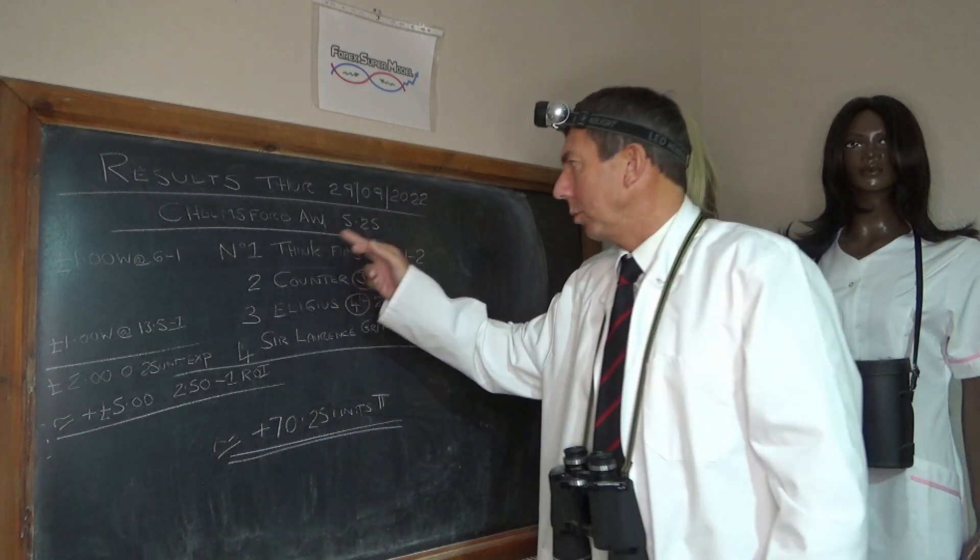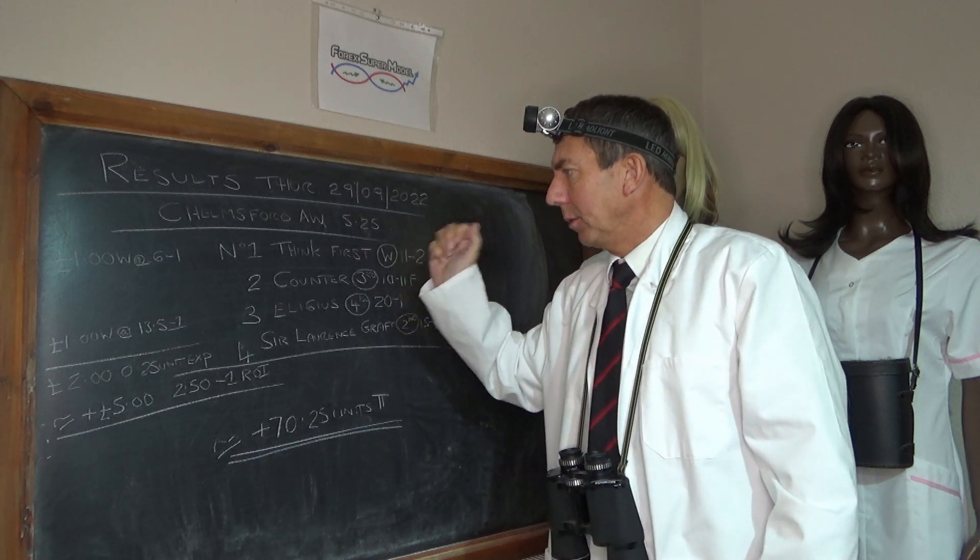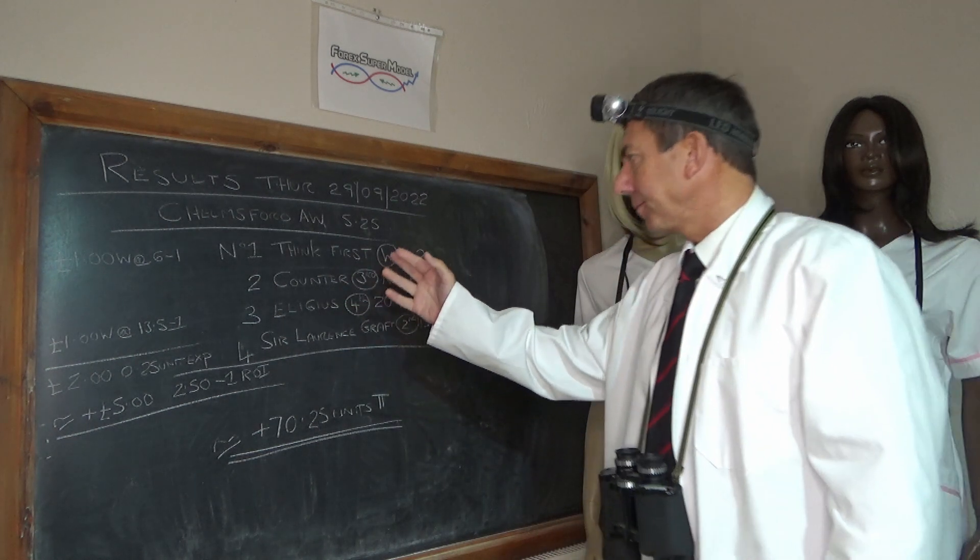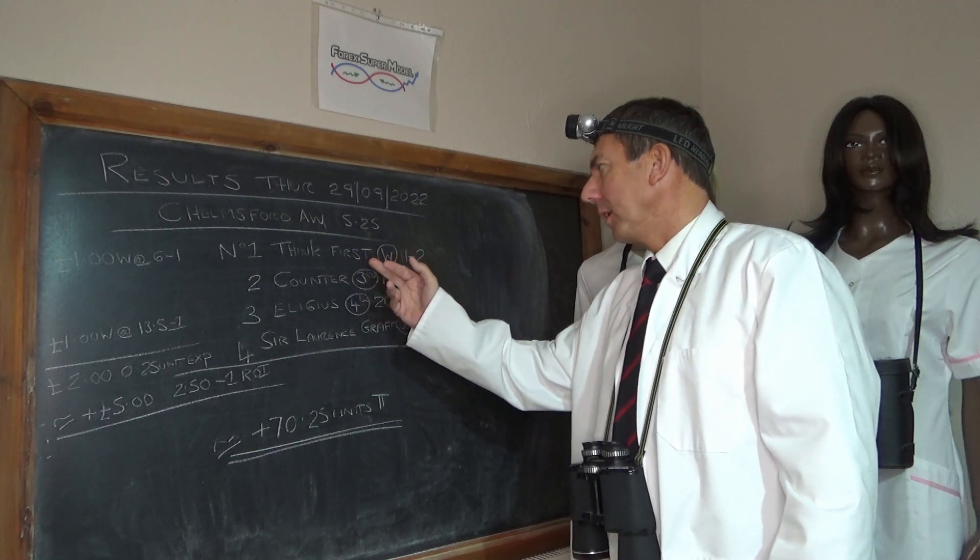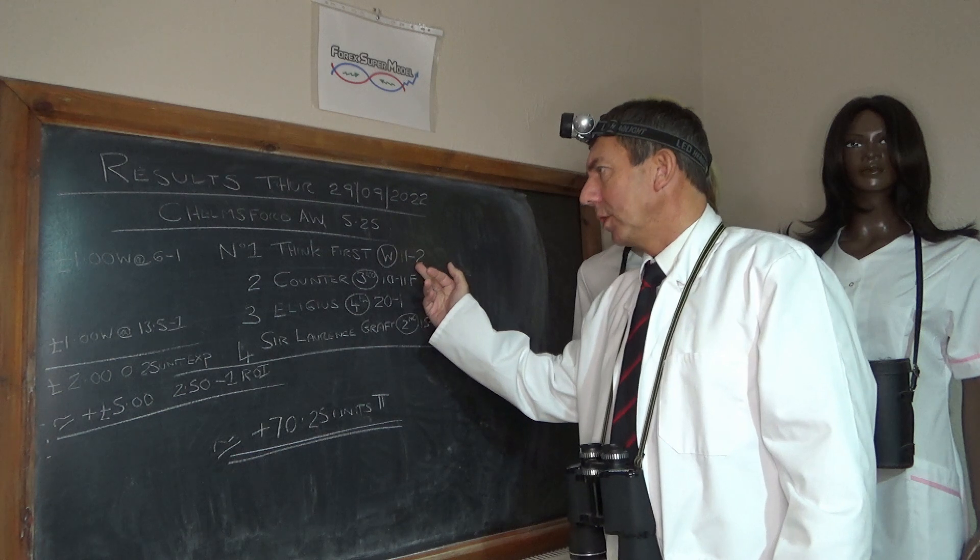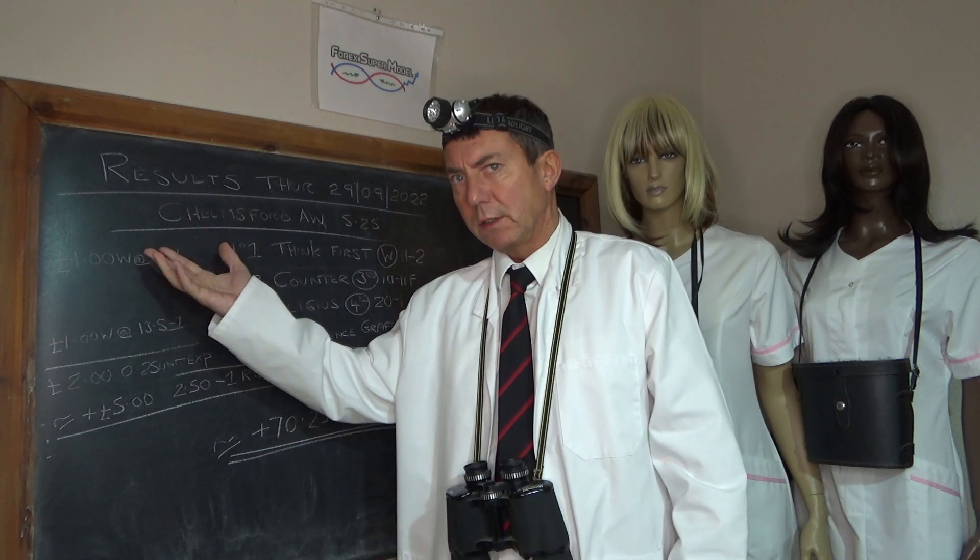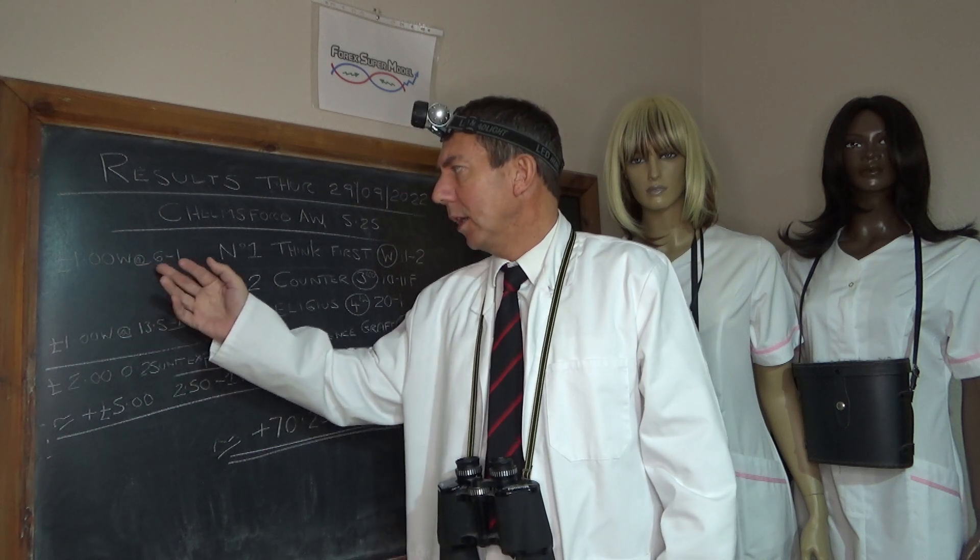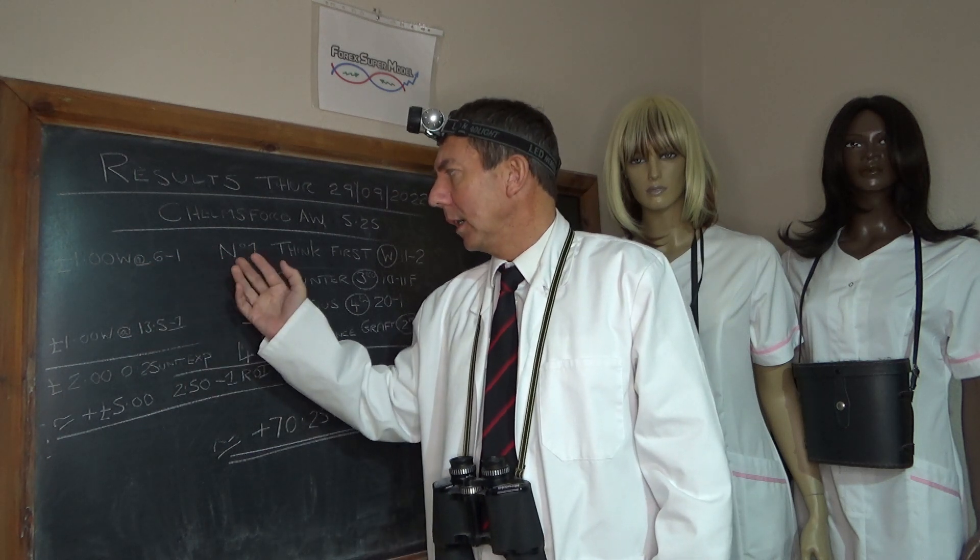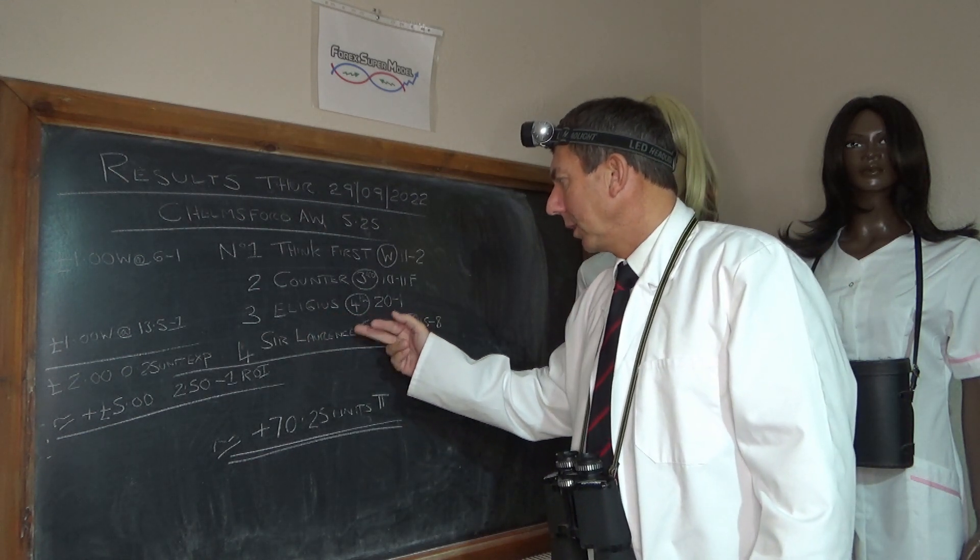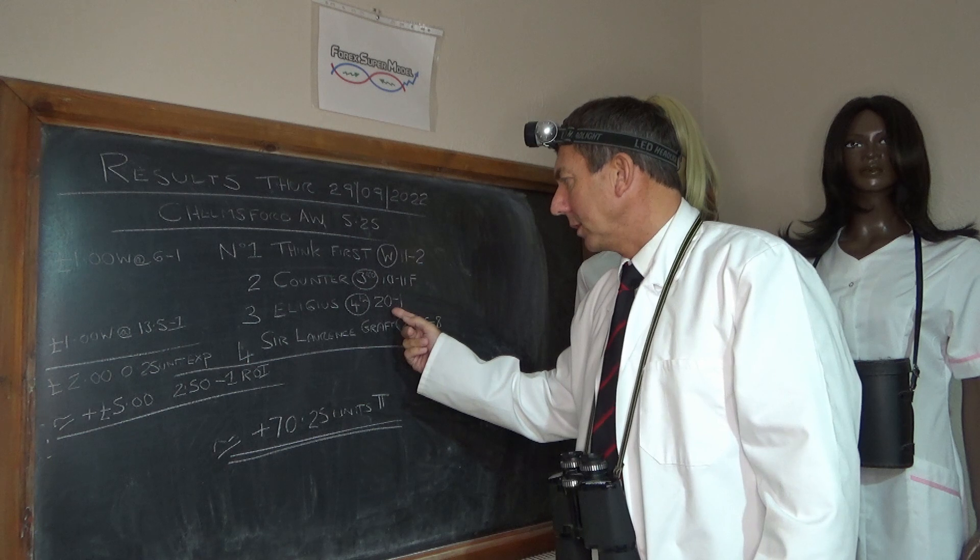We're at Chelmsford on the all-weather in the 5.25. We had a go at two horses in that race, there was only four in the race actually. We got the eventual winner which was number one, think first, which won at 11 to 2. We had a pound per eight pound unit, so in our case it's 100 times bigger, 100 pounds on at 6 to 1. And we're also on this number three, Elijah's, which came last of the fourth at 20 to 1.